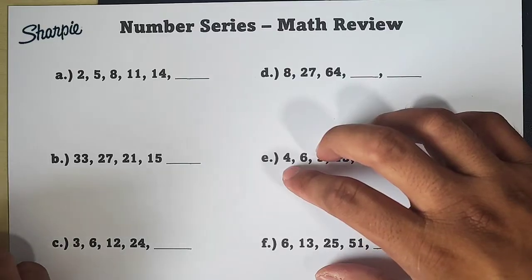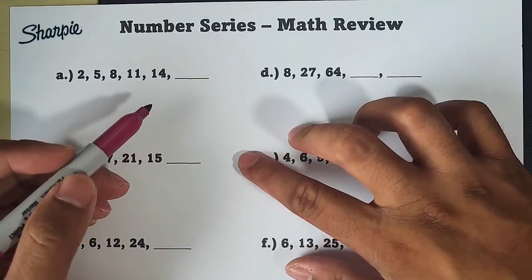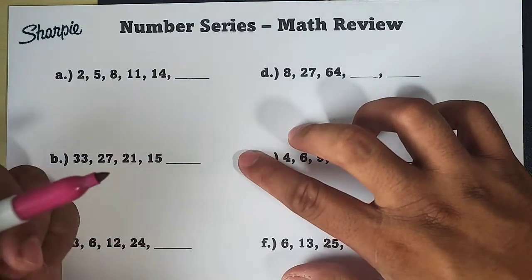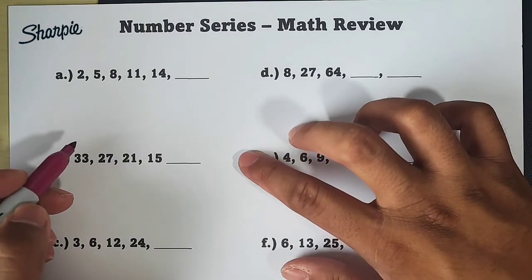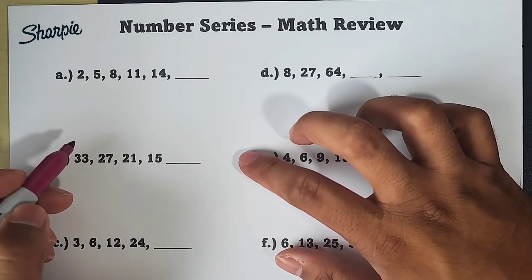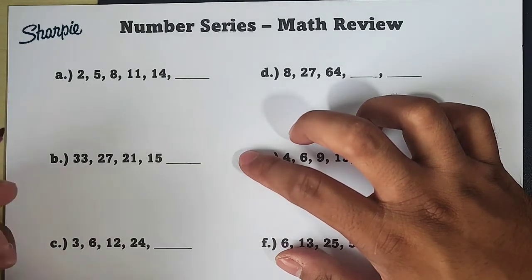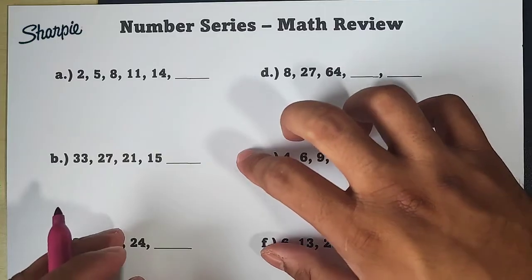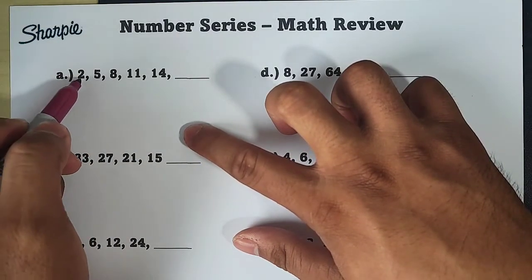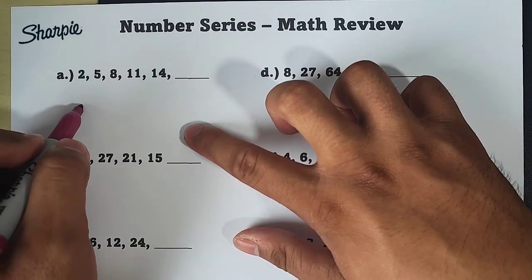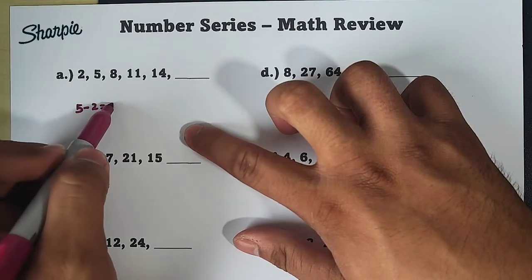For letter A, 2, 5, 8, 11, and 14. Una kong ginagawa rito, when I am doing number patterns or number series, I am subtracting the 1st, 2nd, 3rd, 4th, para makita ko yung kung may pattern ba sila in terms of addition. Let's say for example, 5 minus 2, and as you can see, that is equal to 3.